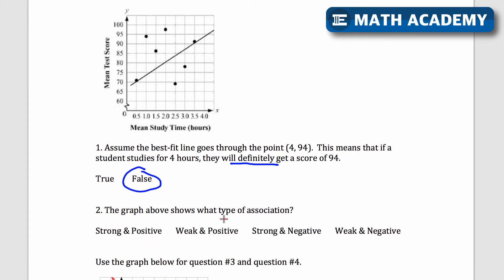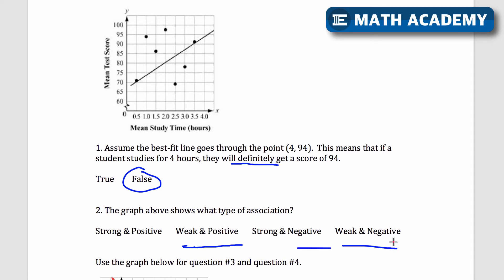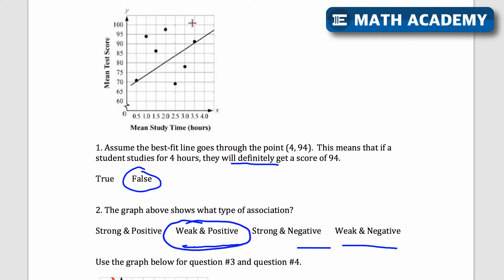Number two, the graph above shows what type of association. So an association, they've got strong and positive, weak and positive, strong and negative, weak and negative. A strong association means that the points are very close to the line of best fit. Well this one they're not very close, they're kind of scattered all about, so this would be a weak association. And is it positive or negative? Well that just depends on the direction of the line. If it goes up, in other words if it's a positive slope, it's going to be a positive association. So this one is going to be weak because they're spread apart and positive because the slope goes up.